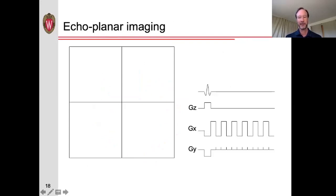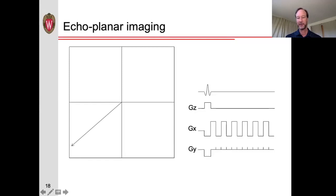Another technique used quite commonly for functional MRI and diffusion tensor imaging is echo-planar imaging (EPI). After exciting the spins and placing us in the center of k-space, we apply gradients in the negative X and Y directions, moving us to the negative corner of k-space. We then start acquiring data, applying a positive lobe in the X direction to move right, then a small blip in the Y direction to step slightly further. We then reverse the X gradient and scan back, repeating this backwards and forward scan.